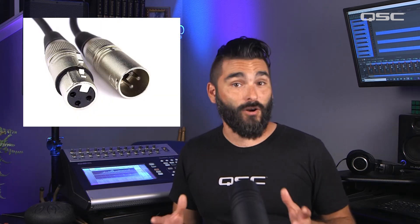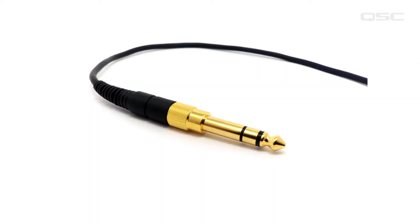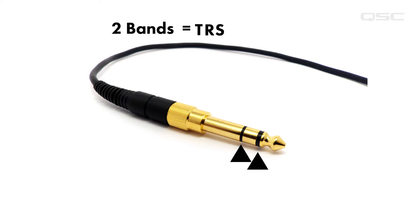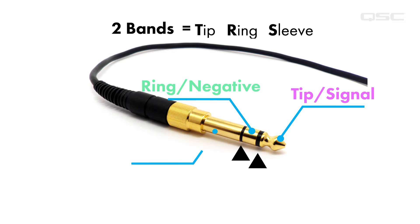The two most common examples of balanced cables in live sound production are XLR cable and TRS quarter inch cables. You can tell the difference between TS and TRS by the number of small bands around the connector. Two bands equals TRS, as these bands separate the tip, ring, and sleeve, which are connected to the three wires inside the cable.